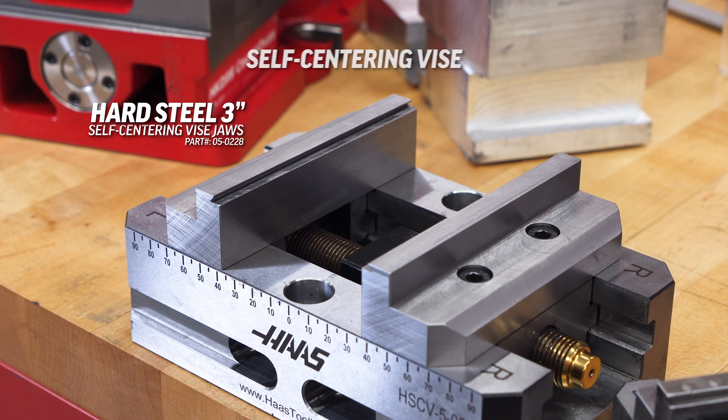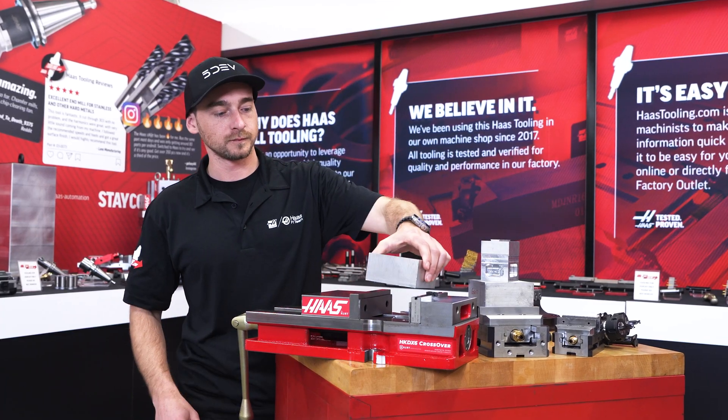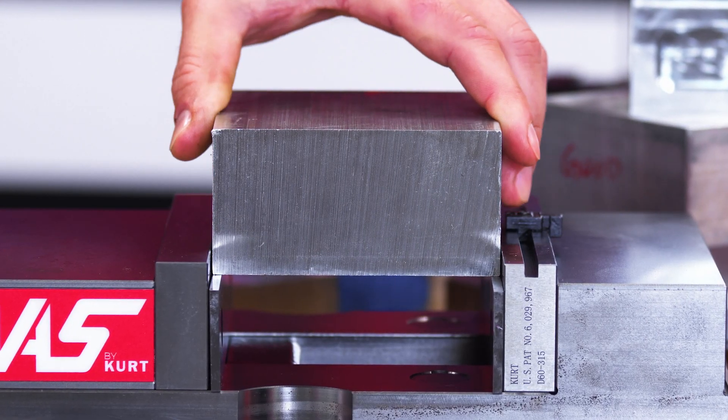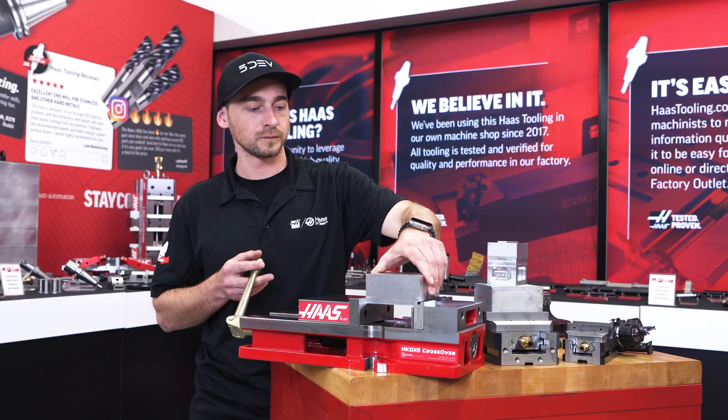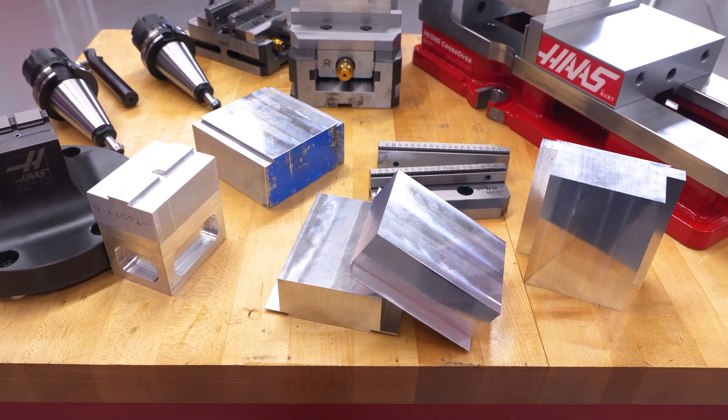Dovetails offer a lot of advantages over traditional work holding methods. Using a vise with straight jaws relies solely on friction to keep your work piece from moving. You often need oversized stock just to be able to hold on to something, and if your material isn't very square it can be impossible to get a good grip.